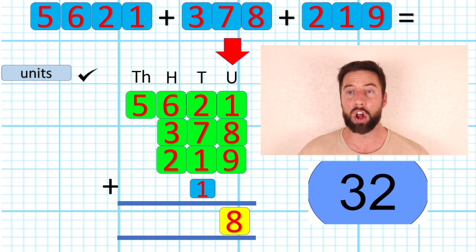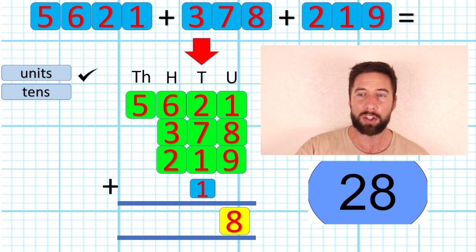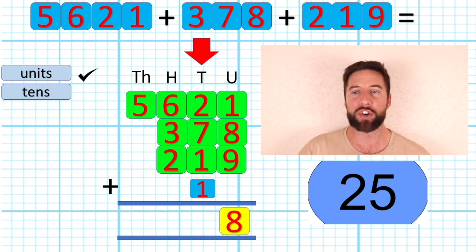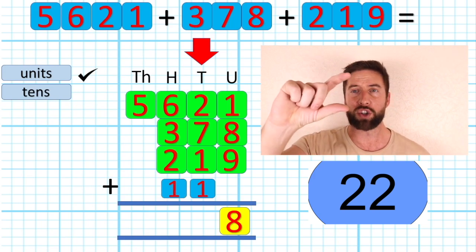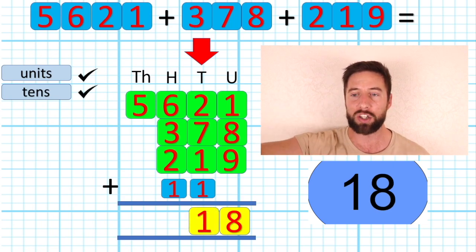Okay, now we can add up our tens column. I've got 2, a 7, a 1 and now I've got this 1 from our units answer. 2, 7, 1 and 1 is 11 or 110. So I'm going to put my 100 in my hundreds column ready for my hundreds question and my 1 in my tens answer row.